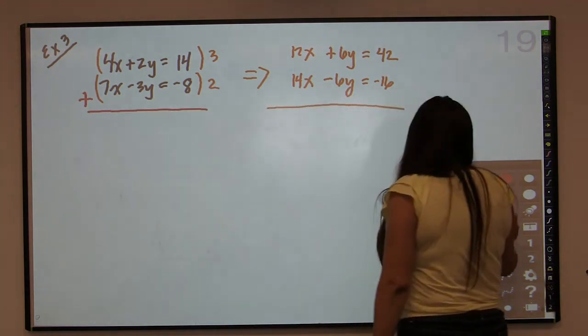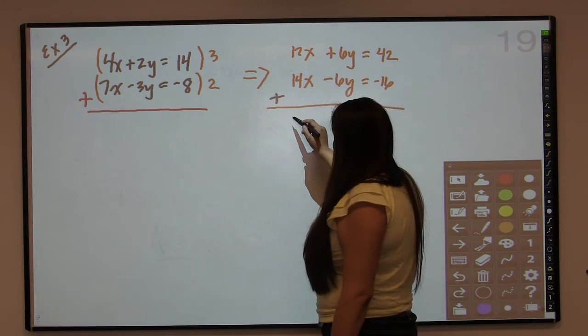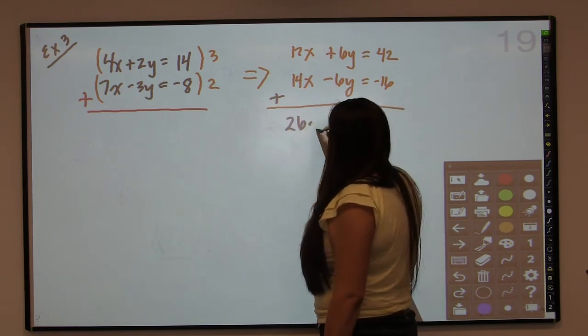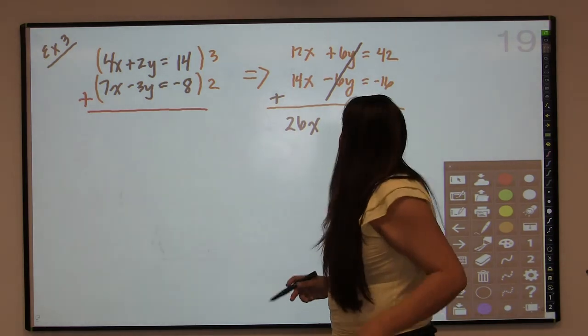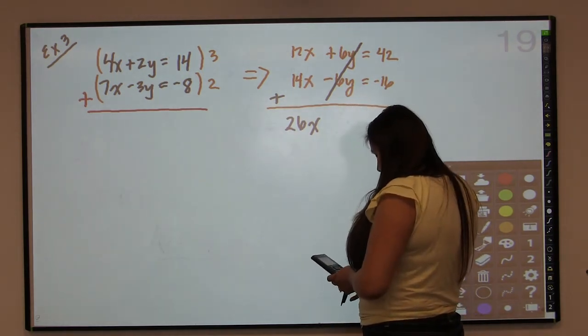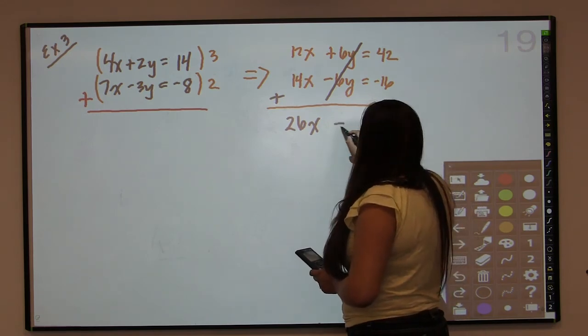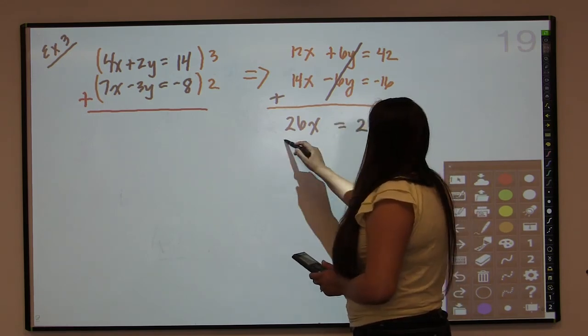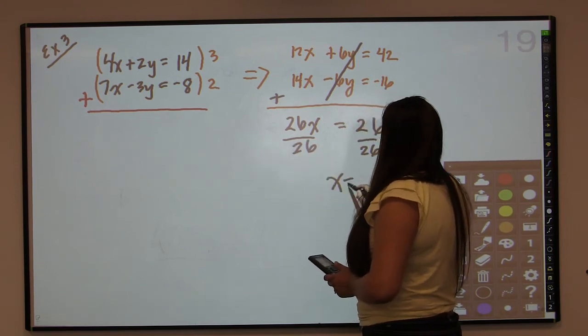And now when I add them together, the x's don't cancel. I am going to get 26x. But the y's cancel because you have a positive 6 and a negative 6. And then 42 minus 16 is going to give you 26. Now when I divide both sides by 26, lo and behold, x equals 1.